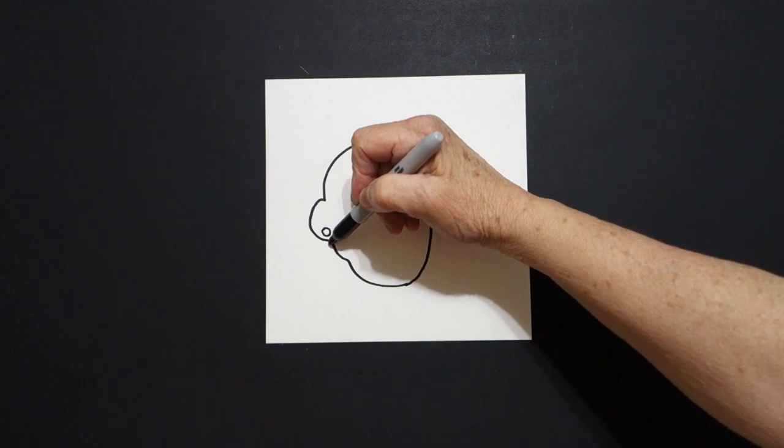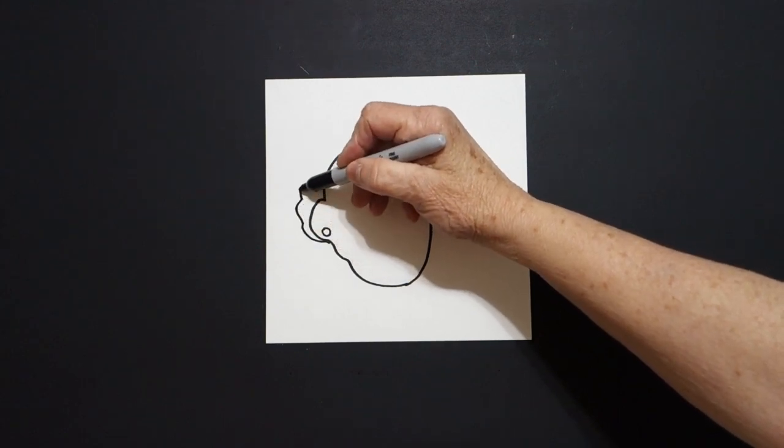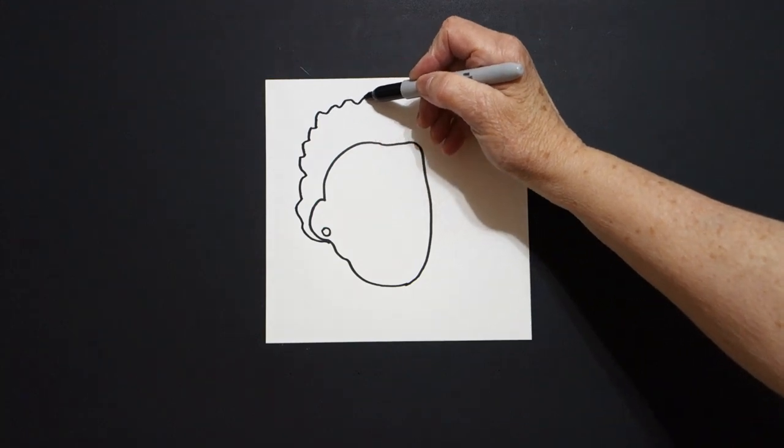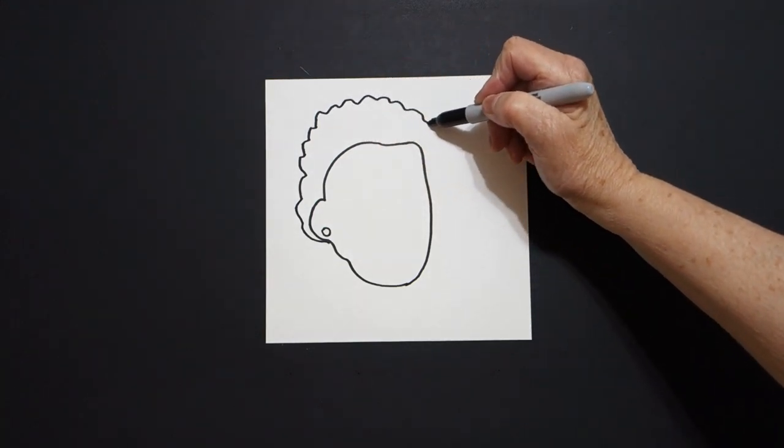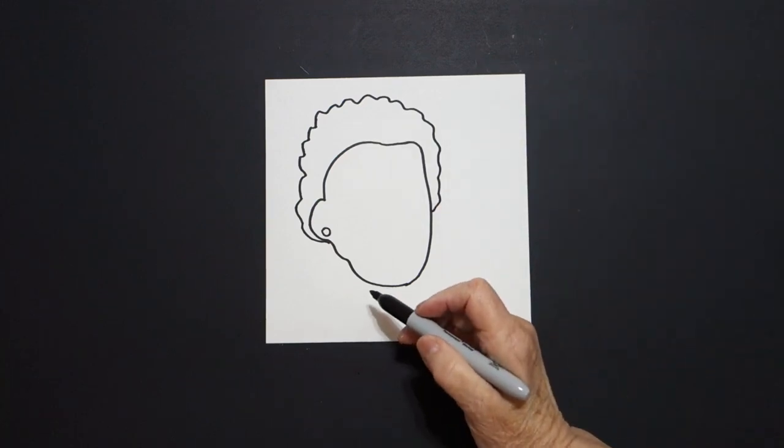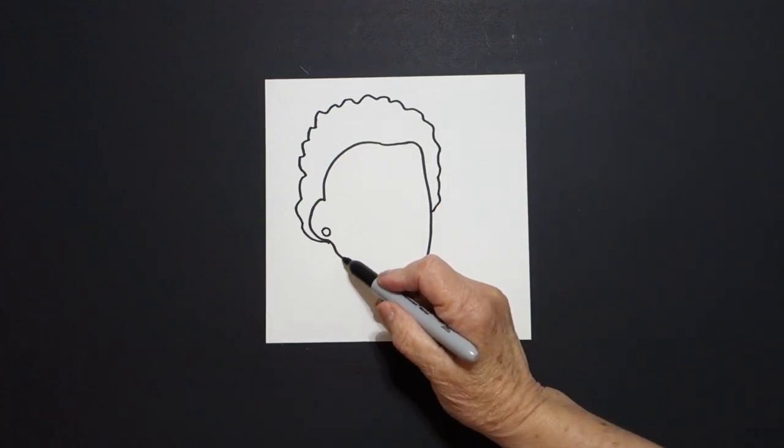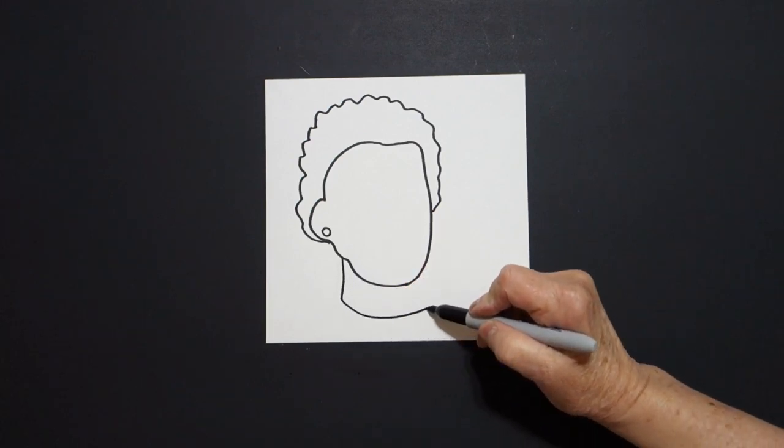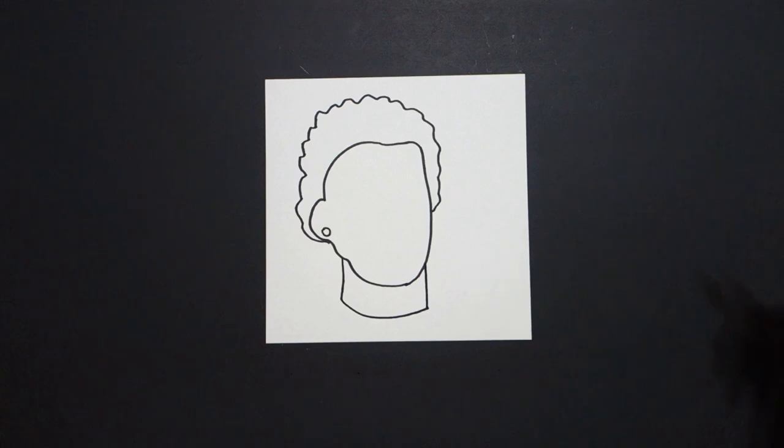And then, starting right about here, I'm just going to draw a wavy, wavy, wavy line up, out, over, and connect. I come back over here on the left and I draw a straight line down, curve line over, straight line up, connect.